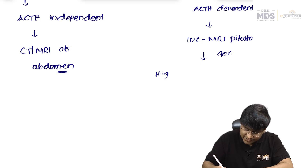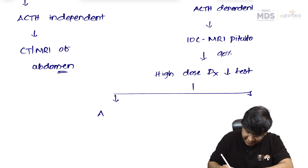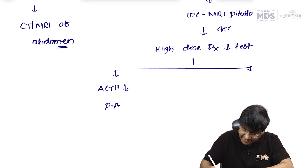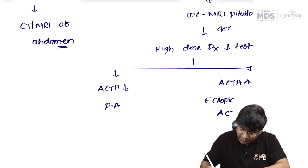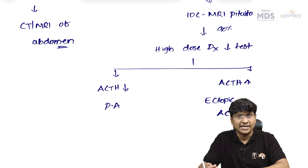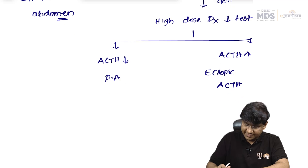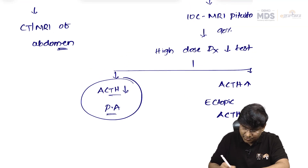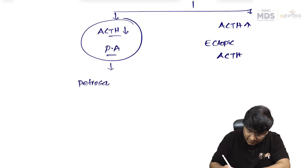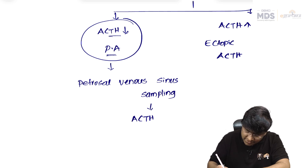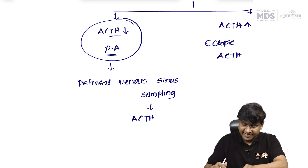In that case, perform a high-dose dexamethasone suppression test. If ACTH levels are suppressed, it indicates pituitary adenoma. If ACTH remains elevated despite high-dose dexamethasone, suspect ectopic ACTH from small cell carcinoma, pancreatic or bronchial carcinoid, medullary carcinoma of thyroid, or pheochromocytoma. If pituitary adenoma is suspected but MRI is normal, check petrosal venous sinus sampling for ACTH.